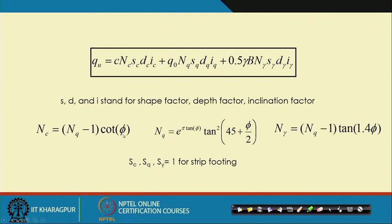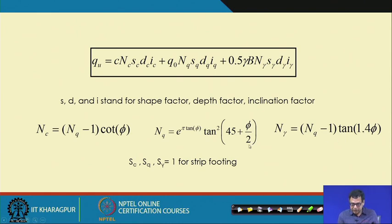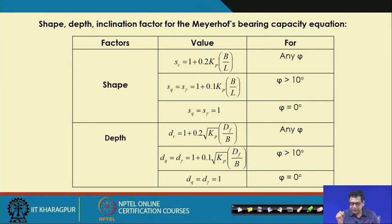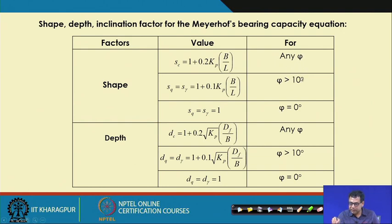N_c, N_q, and N_gamma are functions of phi and are determined using specific equations. For strip footings, all shape factors S_c, S_q, and S_gamma equal 1. Meyerhof provided tables of shape factors S_c, S_q, and S_gamma, as well as depth factors and inclination factors. For shape factor S_c: one equation applies for phi > 10°, another for phi = 0°, and linear interpolation is used for phi between 0° and 10°. The inclination factor uses alpha, which is the angle the load makes with the vertical, and K_p = tan²(45 + phi/2).